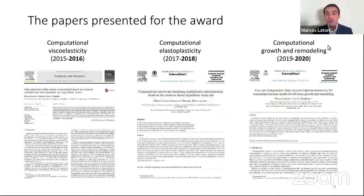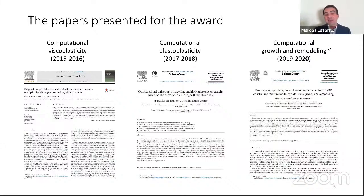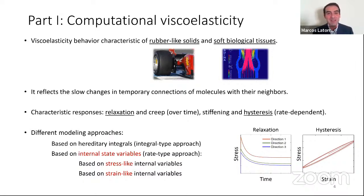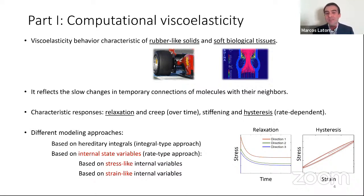I will focus mainly on evolution equations for inelastic solids, their fully implicit algorithms for finite element analysis, and their applications in both engineering practice and science. I have tried to use as few strange symbols as possible, although I'm afraid some of them are yet necessary to show the extent of these publications. Let's start with computational viscoelasticity. This response is characteristic of rubber-like solids and soft biological tissues. It manifests due to slow changes in temporary connections of molecules with their networks under changes in stress.